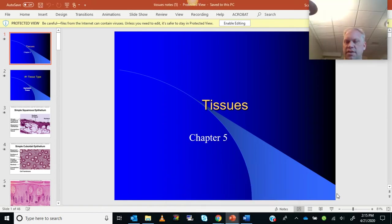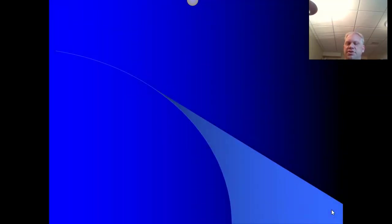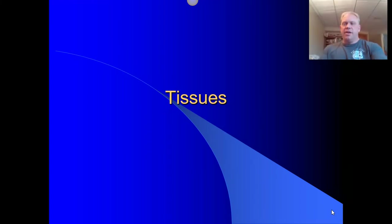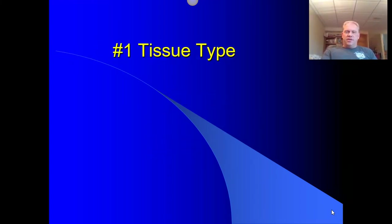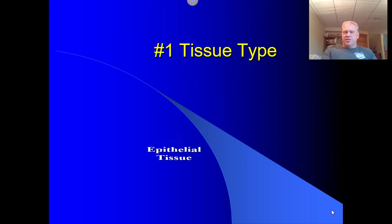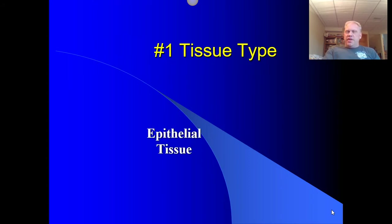Hello, everyone. Let's take a look at some histology, taking a look at tissues in this chapter for anatomy class. We're going to break this down into different parts. The first thing we're going to be taking a look at with tissues or histology are the epithelials.